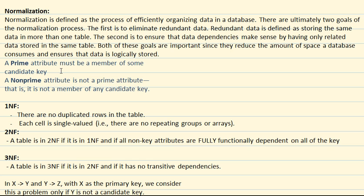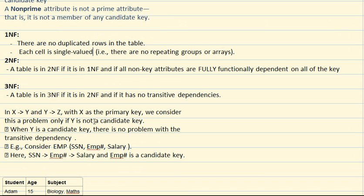There are three kinds of normalization we are going to be discussing about. There are more than these, but since this is a basic understanding of database systems, we're just going to be discussing 1NF, 2NF, and 3NF.